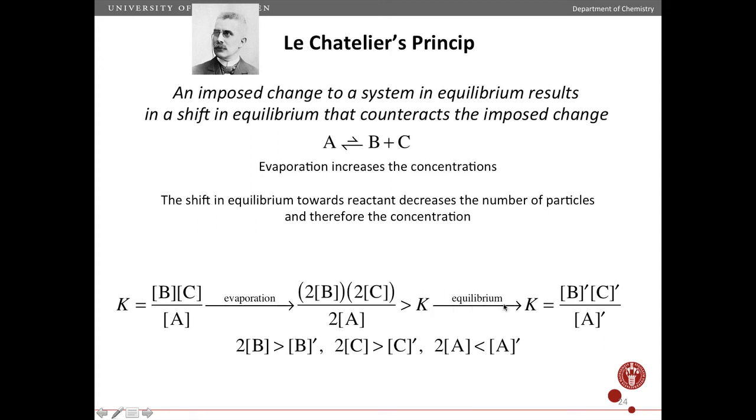So the concentrations must change in order for the equilibrium constant to decrease. And so that's done by decreasing B prime, so the new equilibrium concentration, and C prime, the new equilibrium concentration of C, and increasing this. So decreasing the numerator, increasing the denominator, that will decrease K again to the correct equilibrium value.